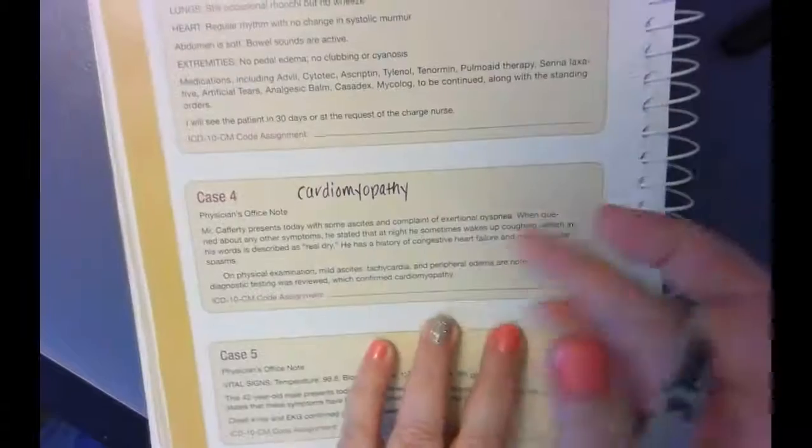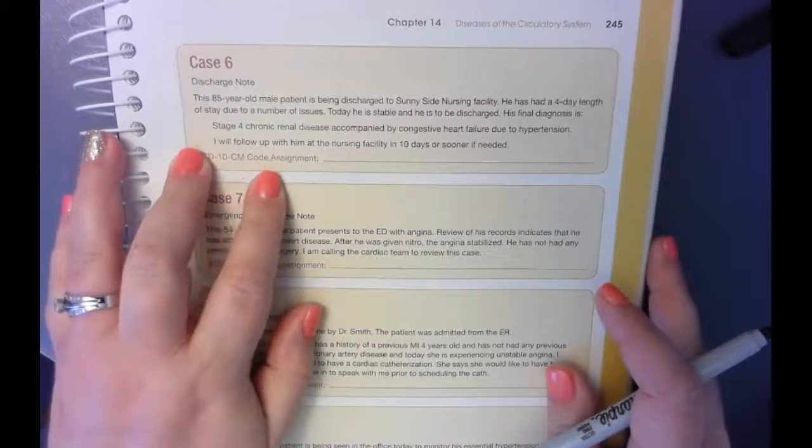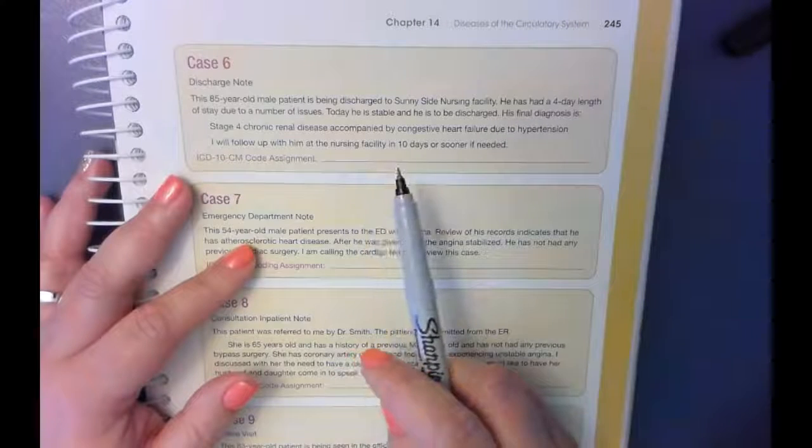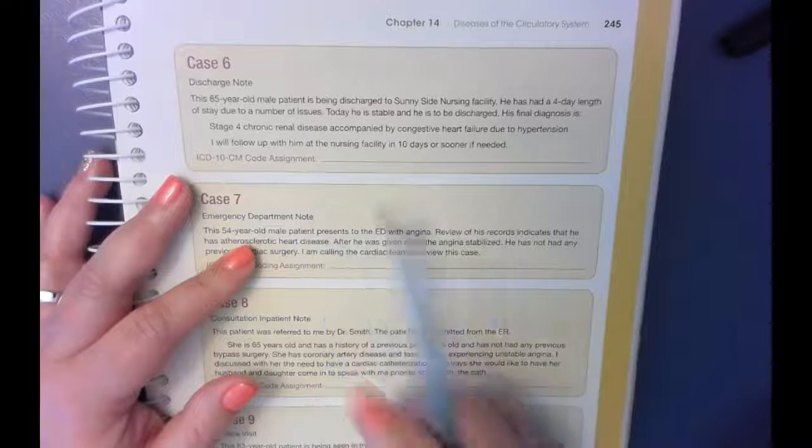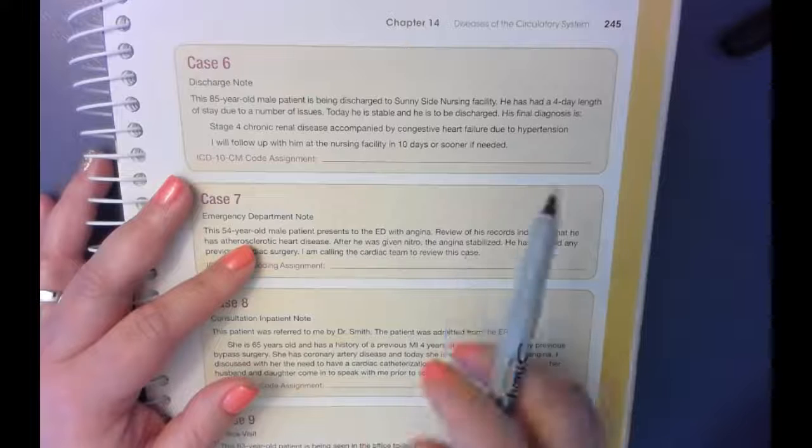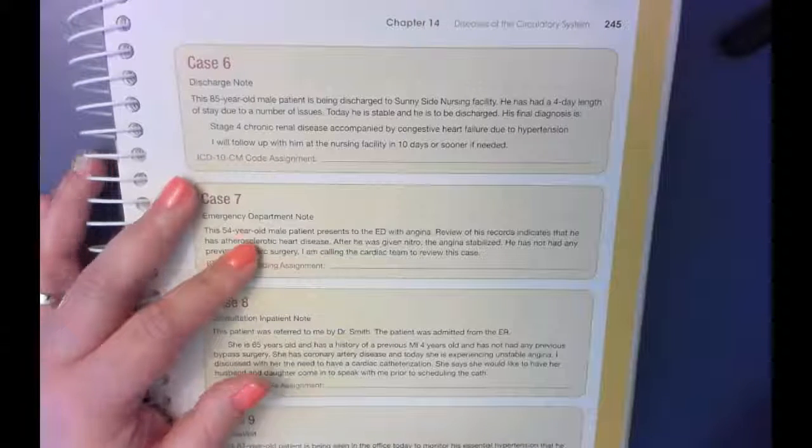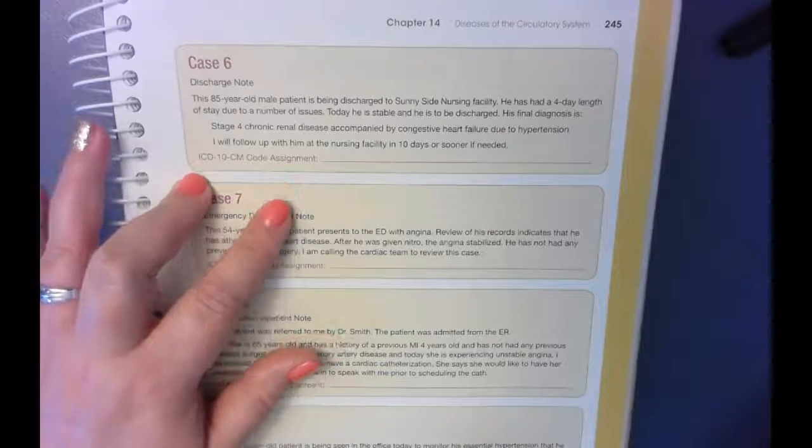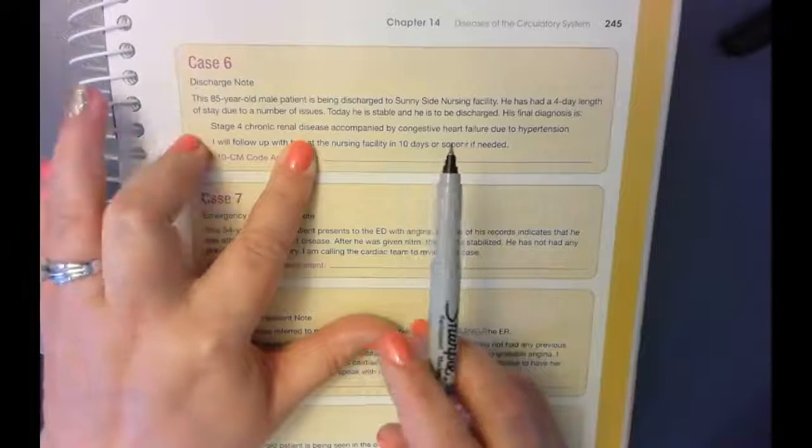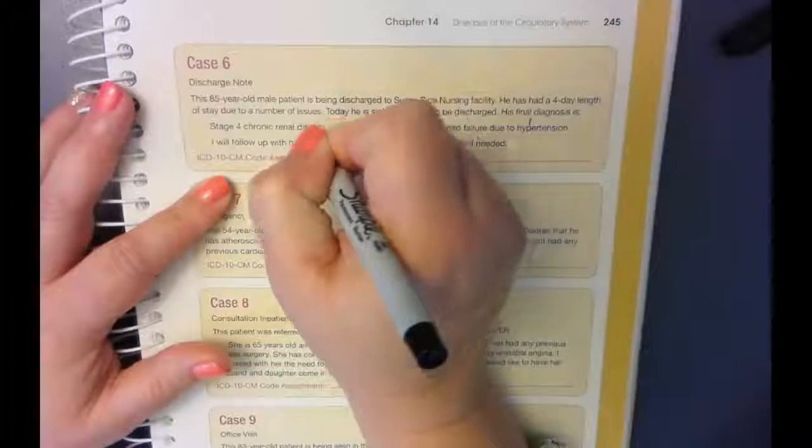For case six, let's flip this over here. Case six is a discharge note. 85 year old male patient. Final diagnosis with stage four chronic renal disease accompanied by congestive heart failure due to hypertension. Now you need to remember that we were talking about this in class earlier. There are coding guidelines that need to be reviewed before assigning these codes. So here we go for number six. There's going to end up being several codes here. So chronic renal disease, it's going to be heart failure, hypertension. So he's going to have three codes.